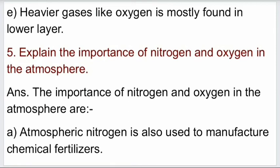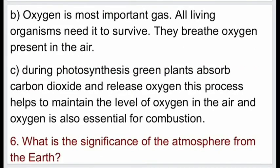Fifth question: explain the importance of nitrogen and oxygen in the atmosphere. Answer: first, atmospheric nitrogen is used to manufacture chemical fertilizers; second, oxygen is the most important gas — all living organisms need it to survive and they breathe oxygen present in the air; third, during photosynthesis, green plants absorb carbon dioxide and release oxygen, which helps maintain the level of oxygen in the air, and oxygen is also essential for combustion.